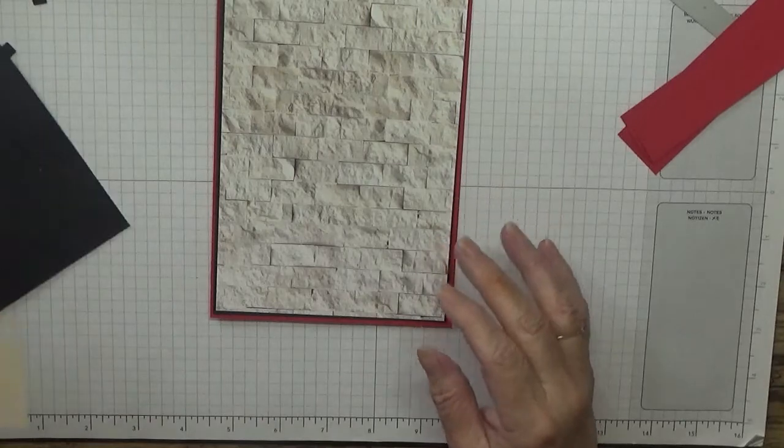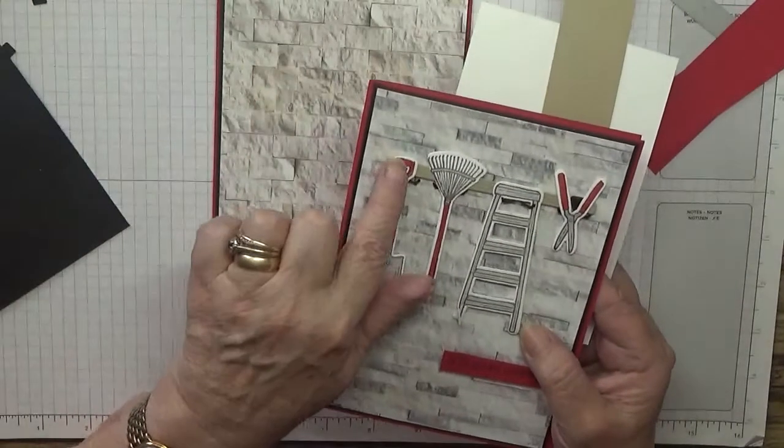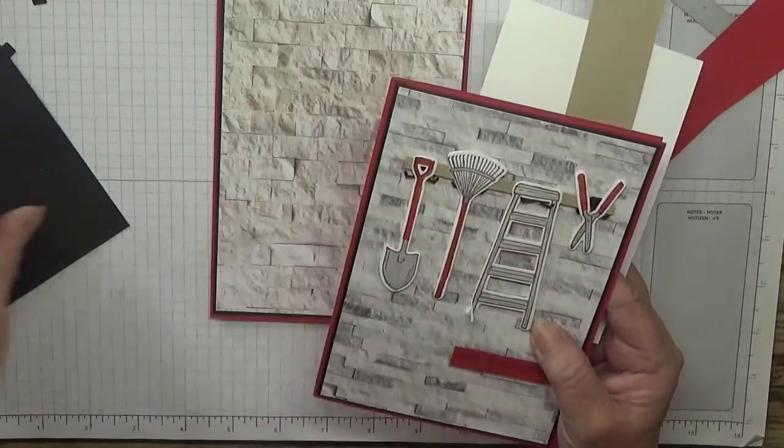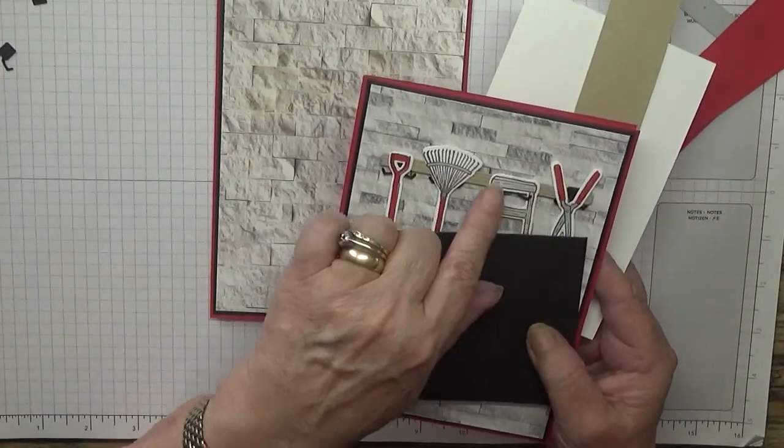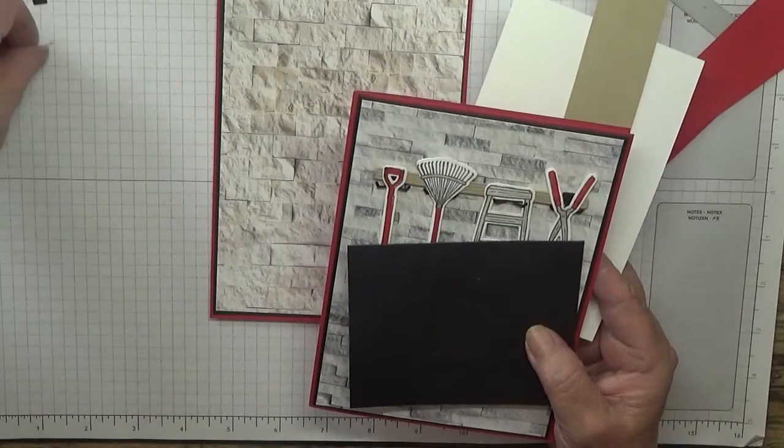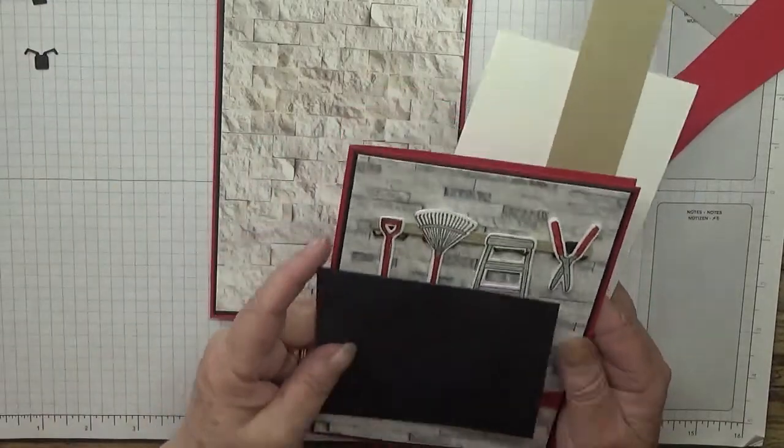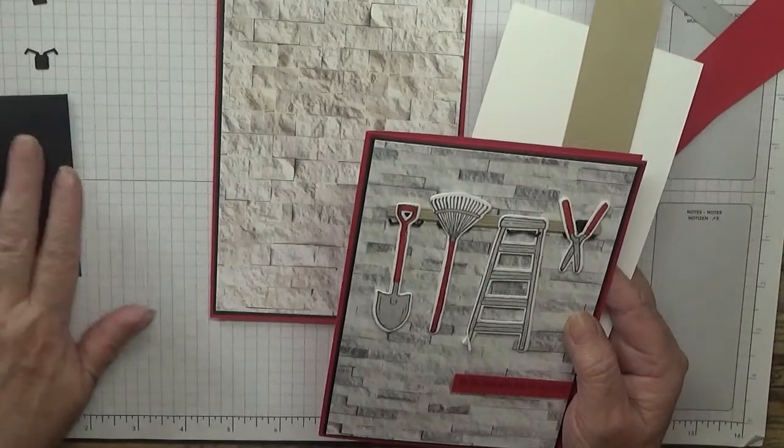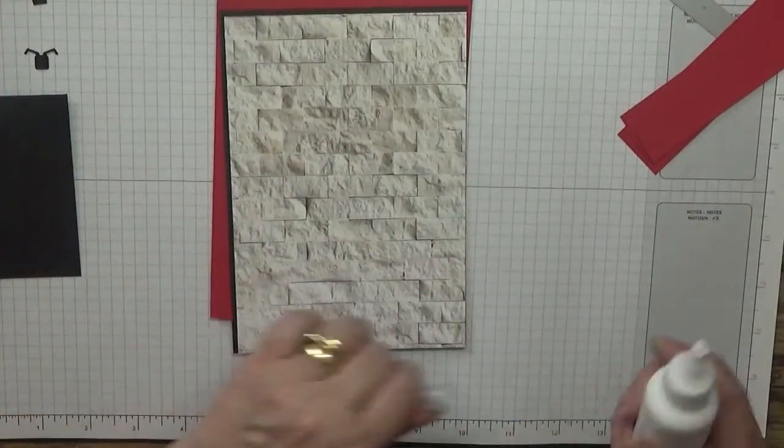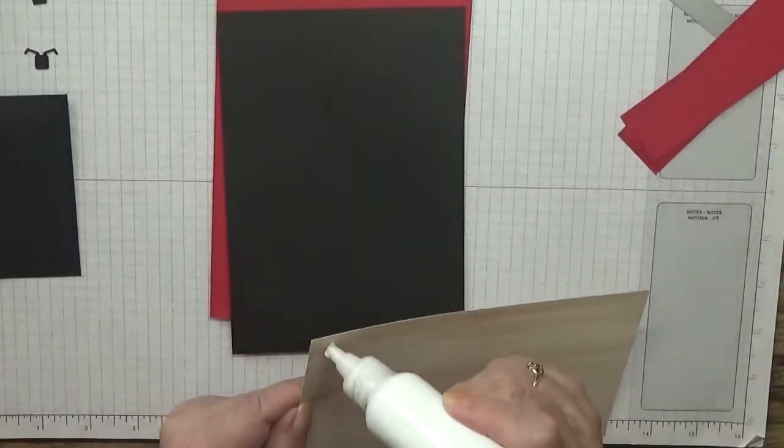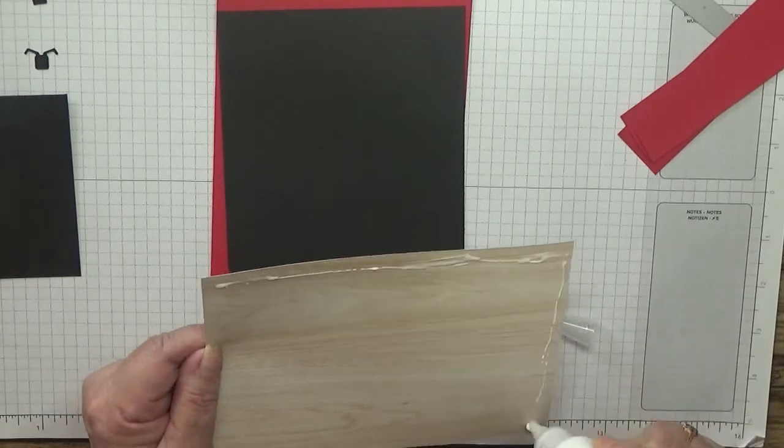I've also got a scrap of white for stamping, a scrap of Crumb Cake for the plank of wood, some black for the little hanging hooks that you hang your tools on, and a scrap of red for the sentiment.